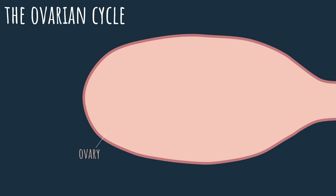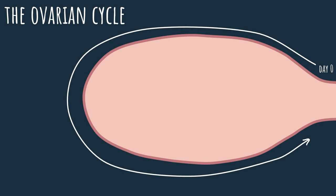As you can see, we have our ovary here. And what we're going to do is start right here, at the beginning of the ovarian cycle, which we will call day zero. We will work our way through the stages until the end of the cycle, which in our case is day 28. So let's get started.